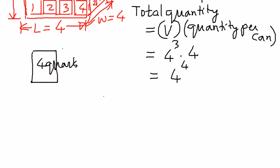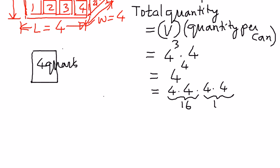If we want to find out what four to the power of four is, the base term needs to be repeated the number of times the exponential term indicates. Four needs to be repeated four times: four times four times four times four. Four times four is sixteen, and sixteen times sixteen is two hundred and fifty-six.